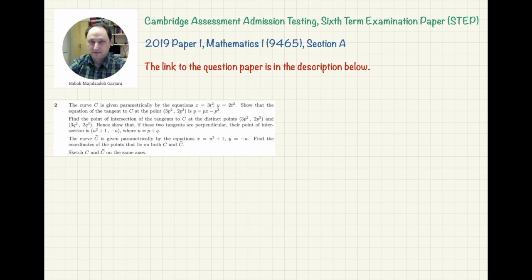In the first part of the problem, I need to find an equation for the tangent line to curve C at that given point, so I have to calculate the gradient of the tangent line first. I need to deal with the derivative, because x and y are not related directly — x is related to t, and y is related to t as well. So I want to calculate dy/dx using the chain rule: dy/dt equals (dy/dx) times (dx/dt).